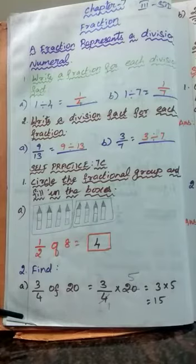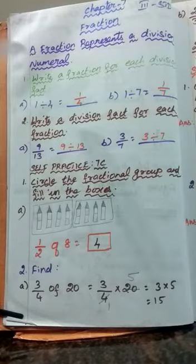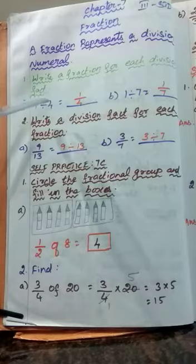Write a fraction for each division fact. So in your question, a division fact is given. For the given division fact, you have to write the fraction. What is the formula for fraction? Fraction equals numerator by denominator. The upper part is called numerator and the lower part is called denominator. See the first one: 1 divided by 4 — this is the division fact.